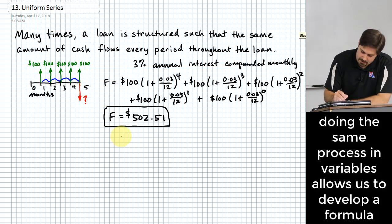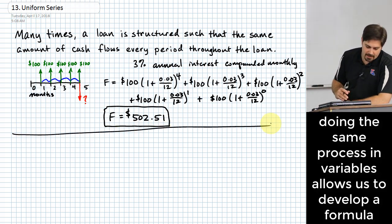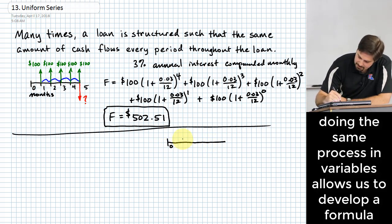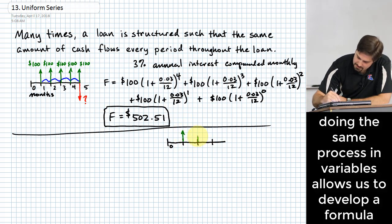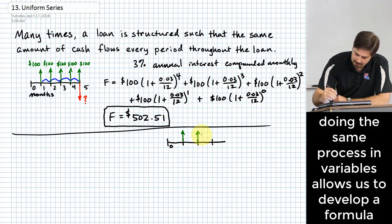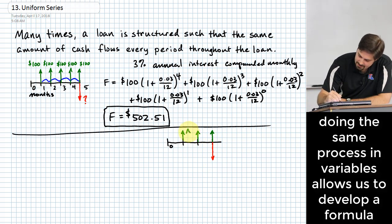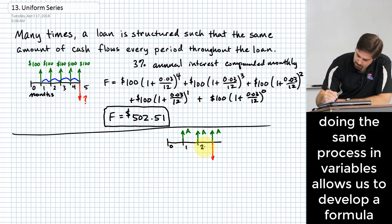There's an interesting thing we can do for these uniform series to turn what we did into something easier than manually typing in each term. Let's derive an actual formula, similar to how we first looked at compounding interest. Here's the basic cash flow diagram: we start with nothing at zero, then begin depositing amounts starting in year one. Let's say three deposits, each of amount A, with interest rate i per period. The question is how much can we withdraw at the end — a future value.